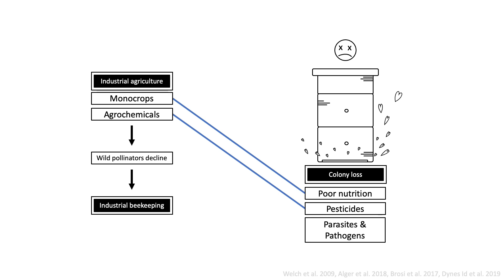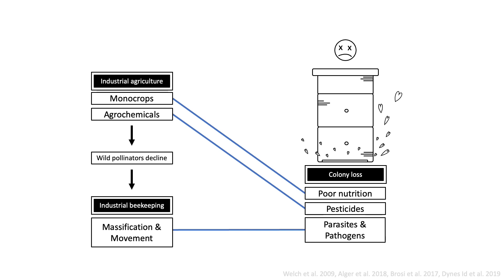Even parasites and pathogens — stressors that seem separate from industrial agriculture — are exacerbated by this system. Housing honeybee colonies in crowded bee yards is a social distancing nightmare. High stocking densities contribute to increased pathogen transmission potential and create conditions that favor increased virulence. Moreover, migratory practices, the cross-country sale of honeybee packages in nucleus colonies, and the growing popularity of hobby beekeeping bring honeybees and the pathogens they carry to all corners of the country. Commercial beekeepers take great care to keep pathogen loads in check, but the conditions of industrial agriculture constantly up the ante.